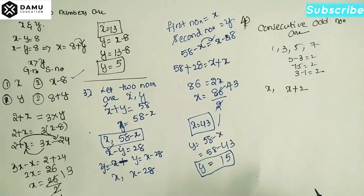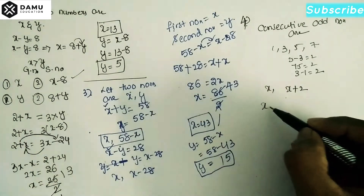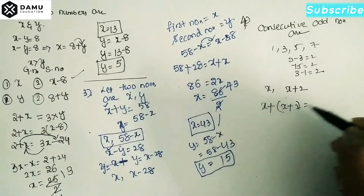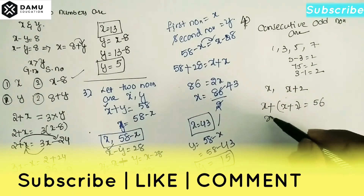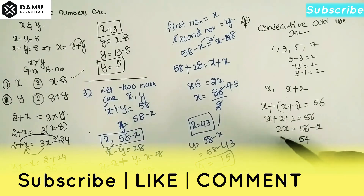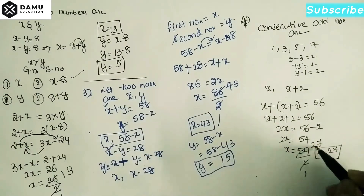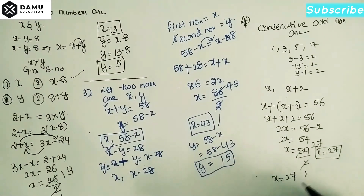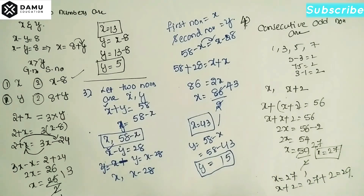Their sum is 56, so x plus (x plus 2) equals 56. That gives 2x plus 2 equals 56, then 2x equals 54, so x equals 27. Then x plus 2 equals 29. The two consecutive odd numbers are 27 and 29. Thanks for watching, please subscribe.